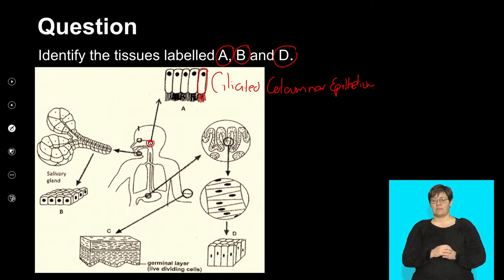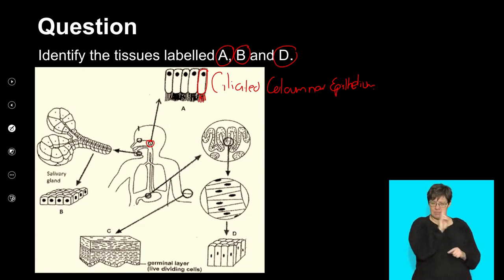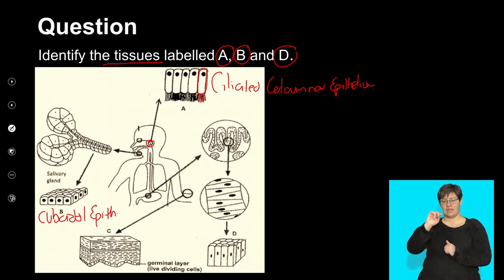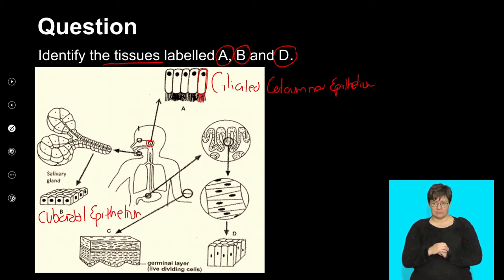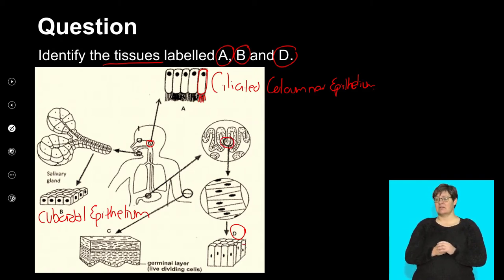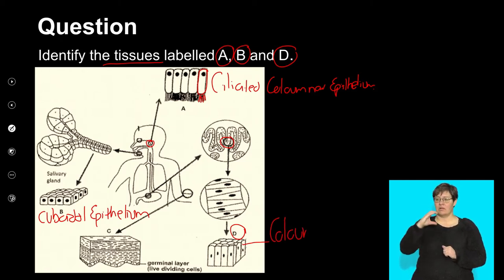The next tissue they ask about is B. Remember, epithelial tissue is all about shape, and it tells me it's in the gland. The shape is cuboidal, so it is cuboidal epithelium — make sure you write the full name, not just cuboidal. The last tissue asked about is D, which is found in your small intestine and the cells are column-shaped, so they are columnar epithelium.